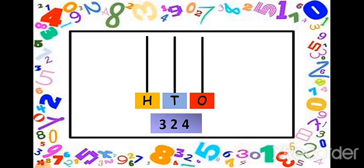Next example: the number three hundred twenty-four. Which digit is written in the ones spike? Four. So we will draw four beads in the ones spike: one, two, three, four. Which digit is written in the tens spike? Two. So how many beads drawn in the tens spike? Two: one, two. Then the hundreds spike — which digit is written? Three. So three beads in the hundreds spike: one, two, three. Thank you.